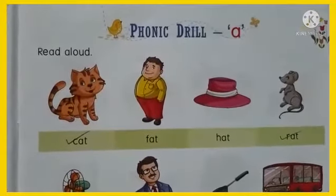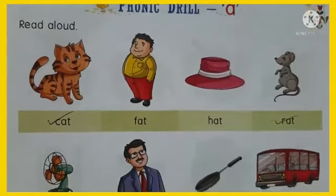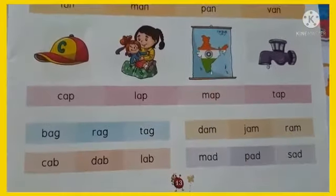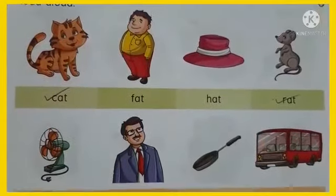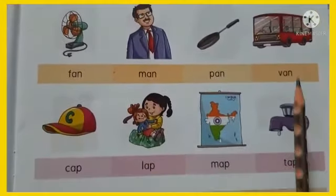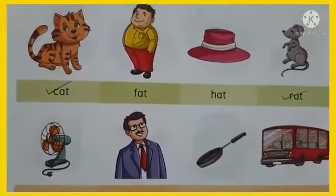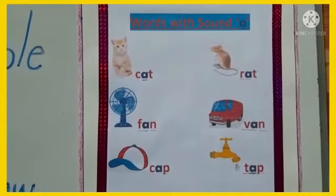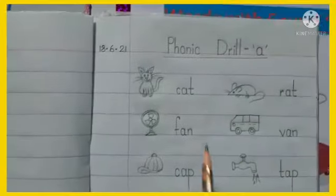Now, you have so many words in your book. On page number 13 we have phonic drill A. You have to read aloud. You already learnt all these words in Montessori 1, so you have to be reading all these words. Today we will do all these words. We will write all these words in our English copy and we will try to make small pictures.